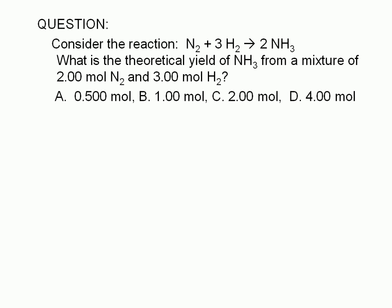Consider the reaction N2 plus 3H2 yields 2NH3. What is the theoretical yield of NH3 from a mixture of 2.00 mol N2 and 3.00 mol H2? A. 0.500 mol, B. 1.00 mol, C. 2.00 mol, D. 4.00 mol.